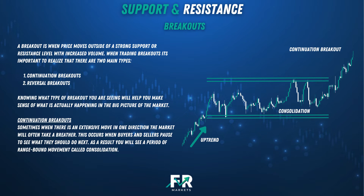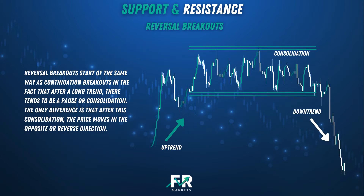Continuation breakouts: sometimes when there is an extensive move in one direction the market will often take a breather. This occurs when buyers and sellers pause to see what they should do next. As a result, you will see a period of range-bound movement called consolidation. Reversal breakouts start off the same way as continuation breakouts in that after a long trend there tends to be a pause or consolidation. The only difference is that after this consolidation, price moves in the opposite or reverse direction.